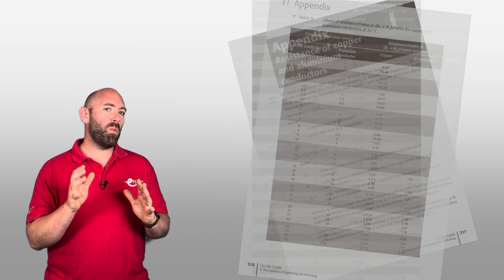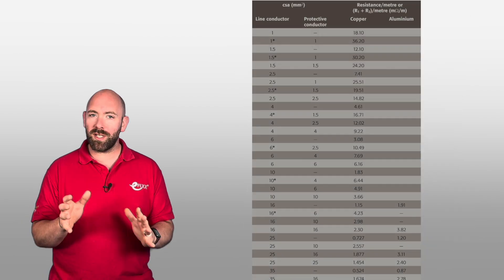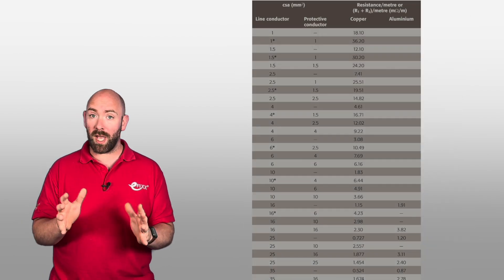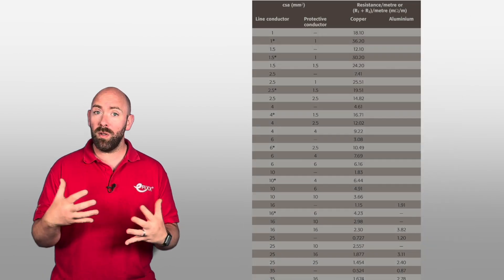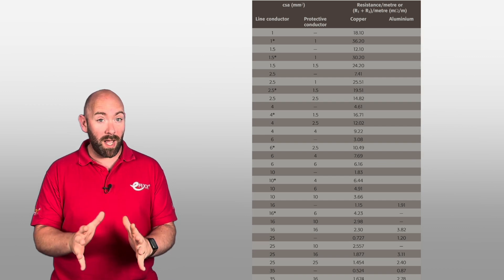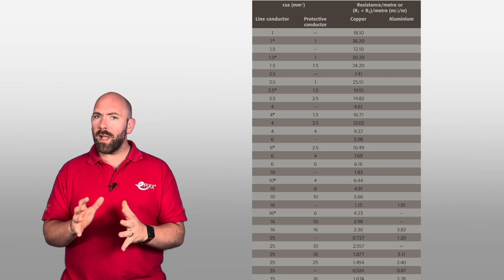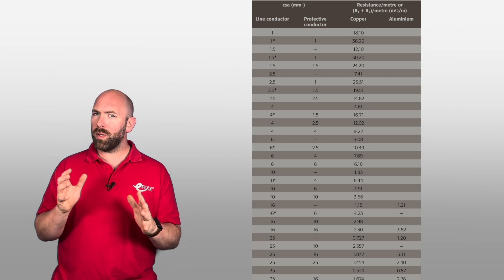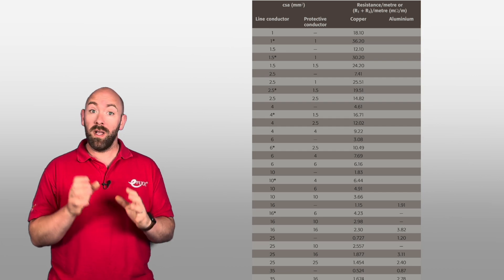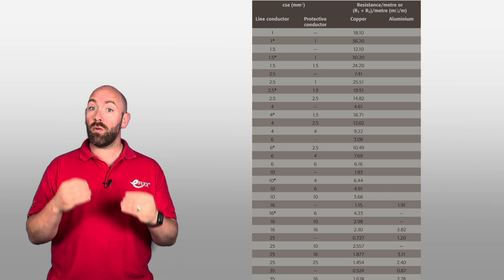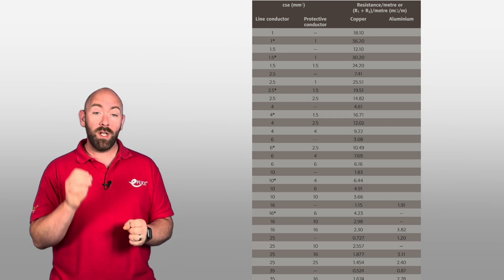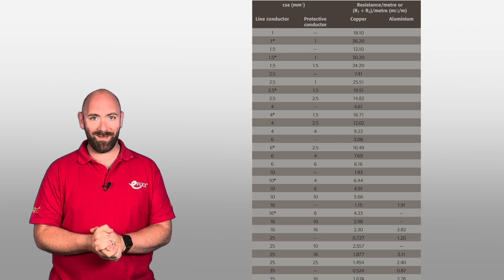I'm going to leave Table B1 here for just a second and invite you to pause the video so you can use the table to have another go yourself. Perhaps this time, work out the R1 plus R2 of a smaller cable to see how the cross-sectional area of a cable directly impacts resistance.